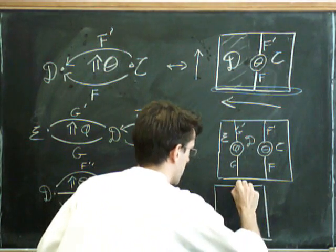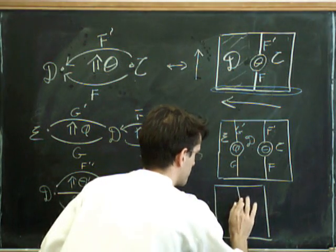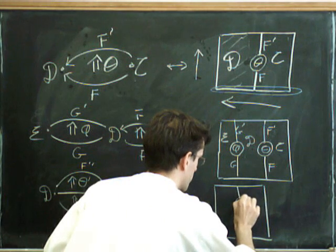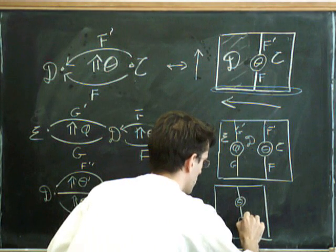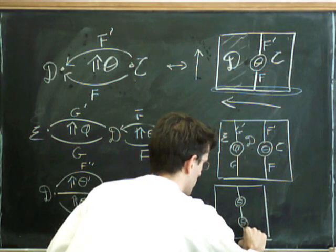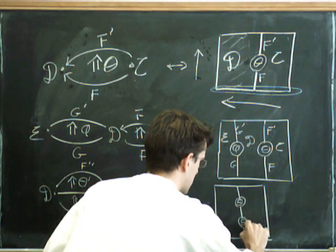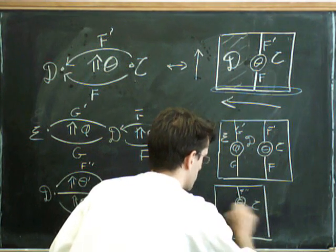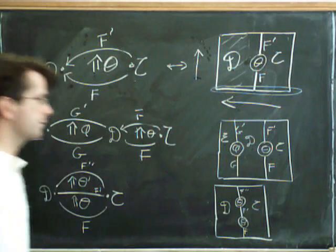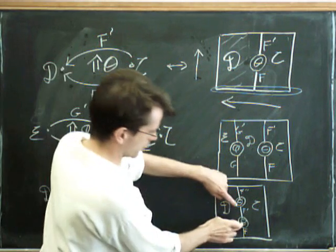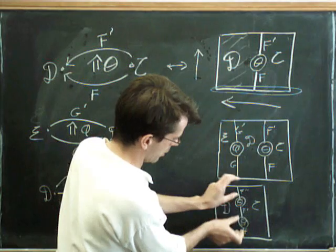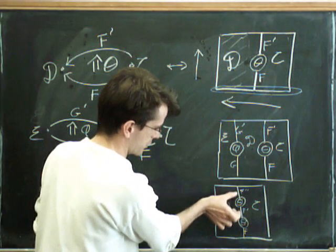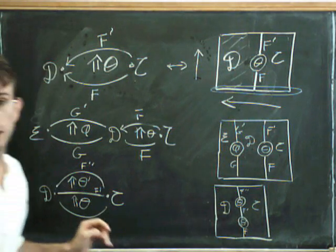So we just draw that by sticking the two things on top of one another. In this case, we have something that looks like this. We have theta primed and we have a theta. And we can label these F, F primed, F prime prime. And this goes from C to D. So this is just telling us we've got two natural transformations which are composable along source and target. The target of that one, the source of that one, and we can just glue them together.